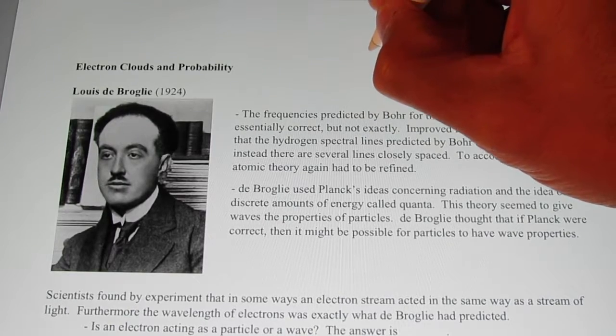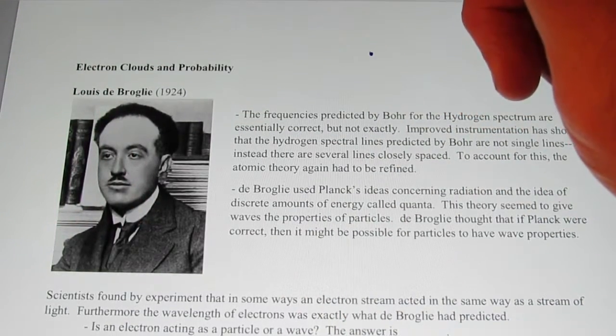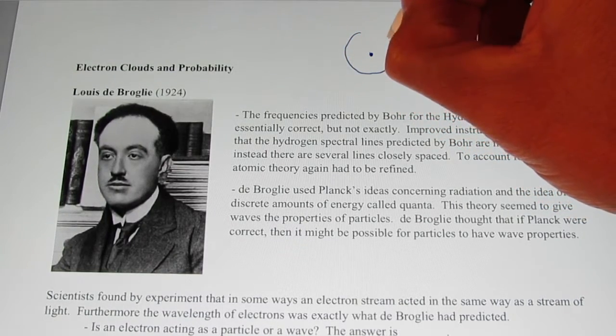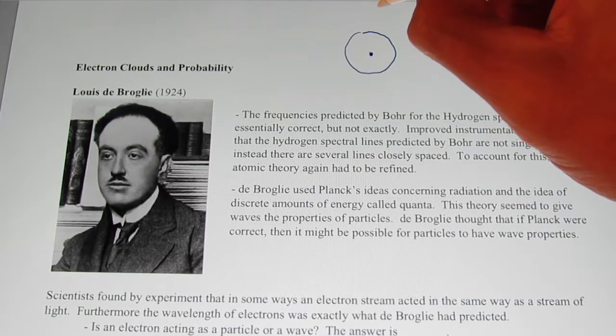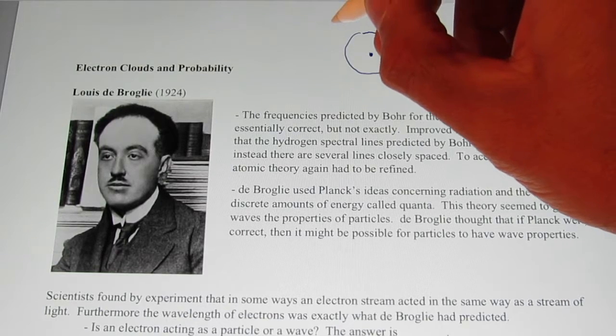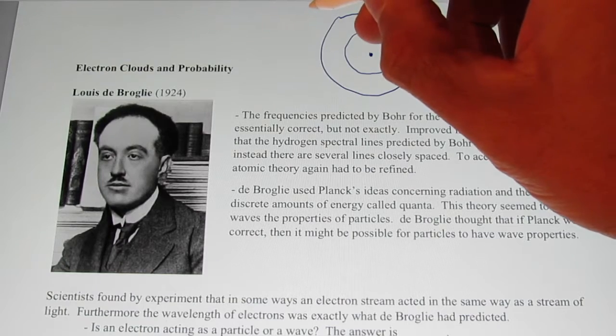Remember, the Bohr model had this nucleus in the center of the atom, which most of the mass of the atom is contained. And these electrons buzzing around the nucleus in these nice pretty circular orbits. There can be the orbit closest to the nucleus, which is the ground state, and then there's another orbit farther away. We'll call it the second energy level or second orbit.